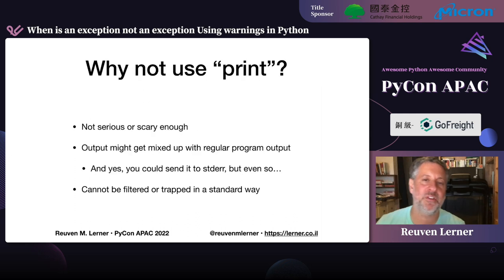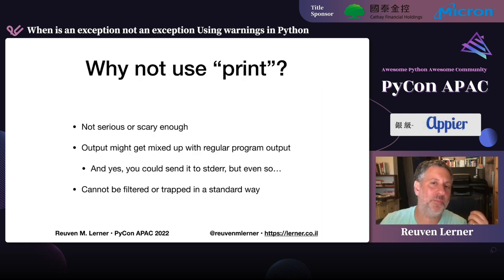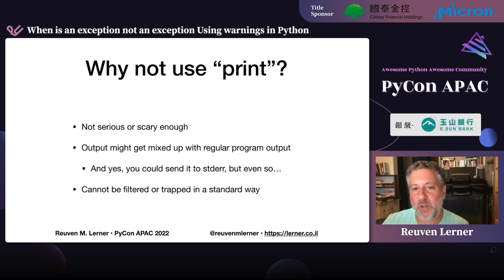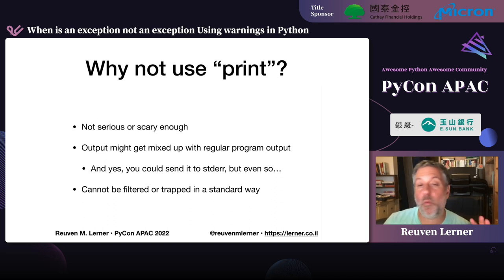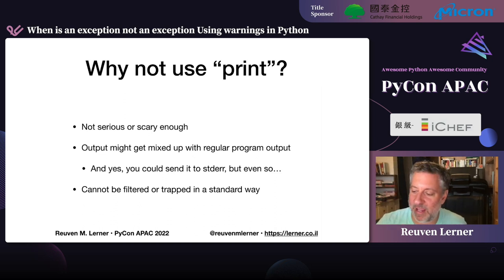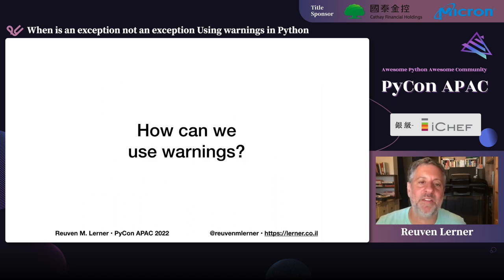Let's try another version: instead of raising an exception, we could just use print. Well, first of all, print is just not serious or scary enough — I need something that's really going to annoy people so they'll say 'I should really deal with this.' Also, the output from print might get mixed up with regular program output. You could print to standard error instead of standard out, but it gets annoying and weird. And you can't filter or trap print statements in a standard way — it's all or nothing. That's where warnings come in.